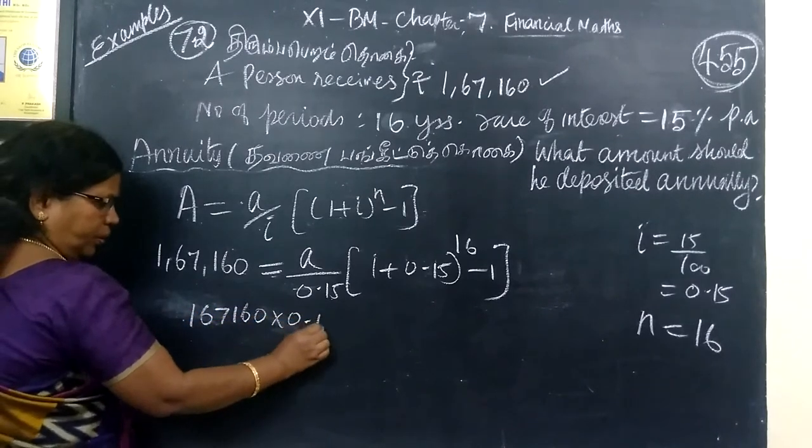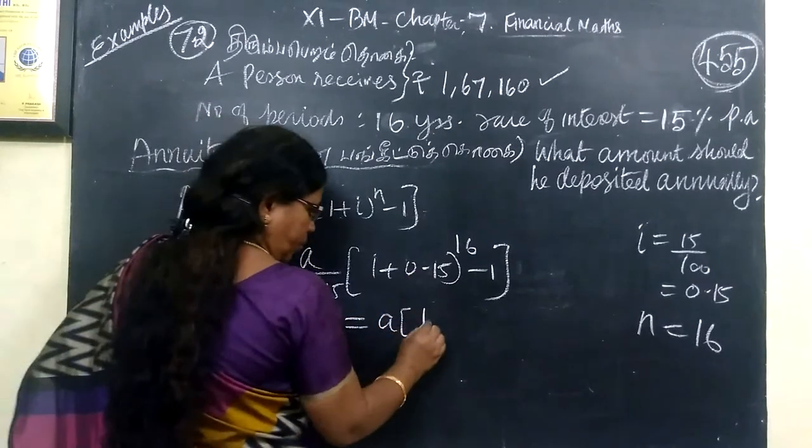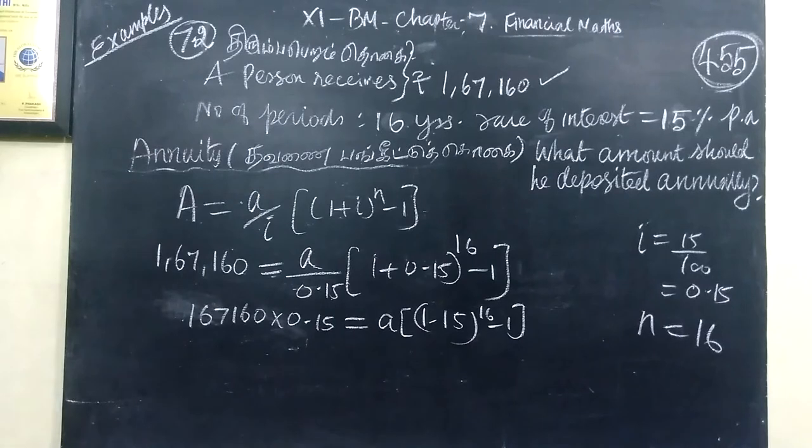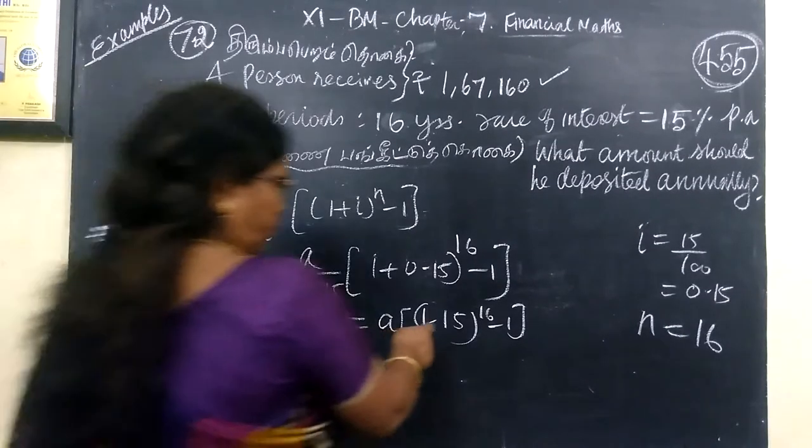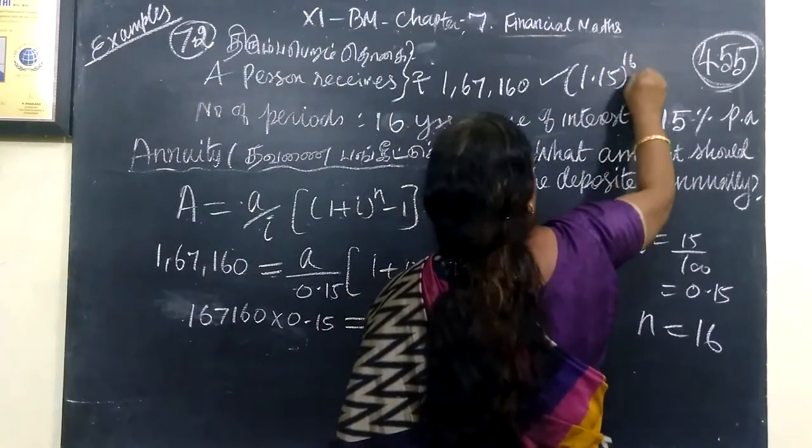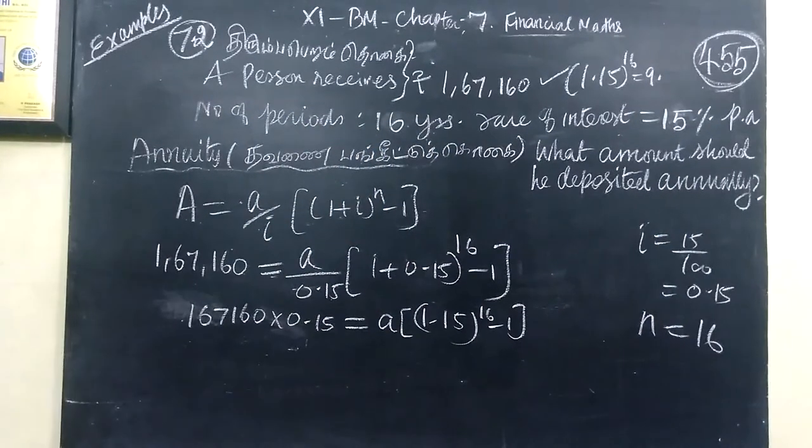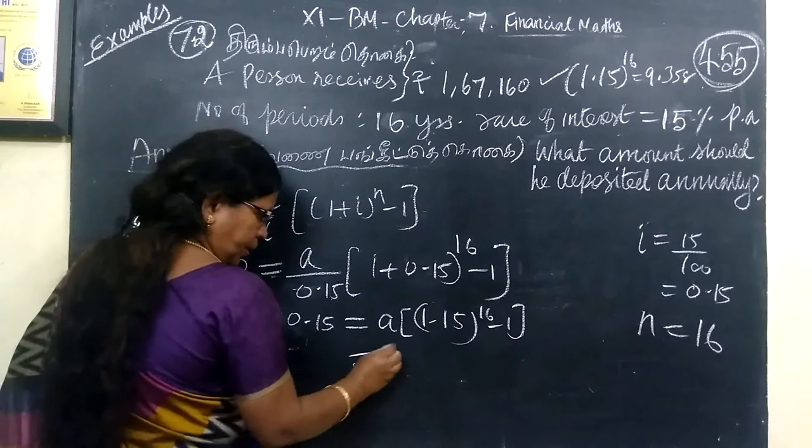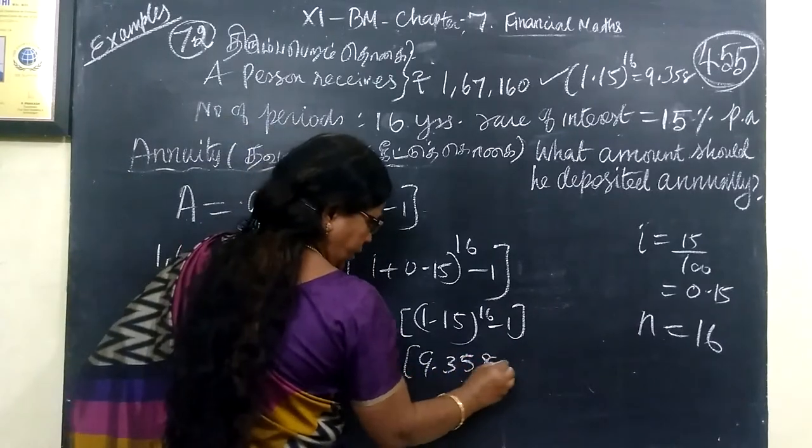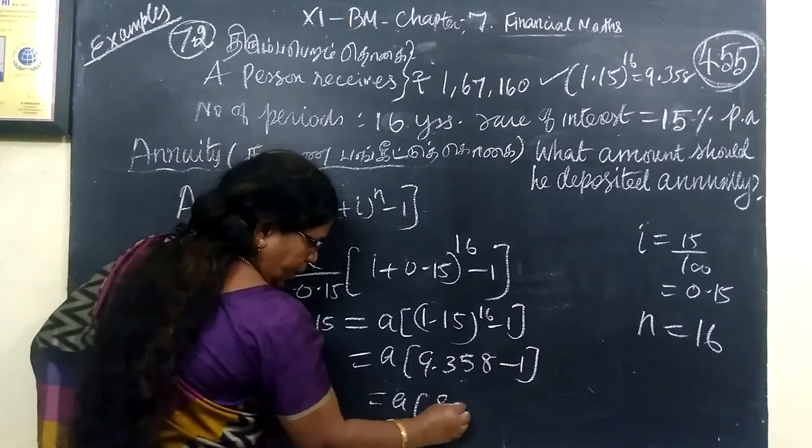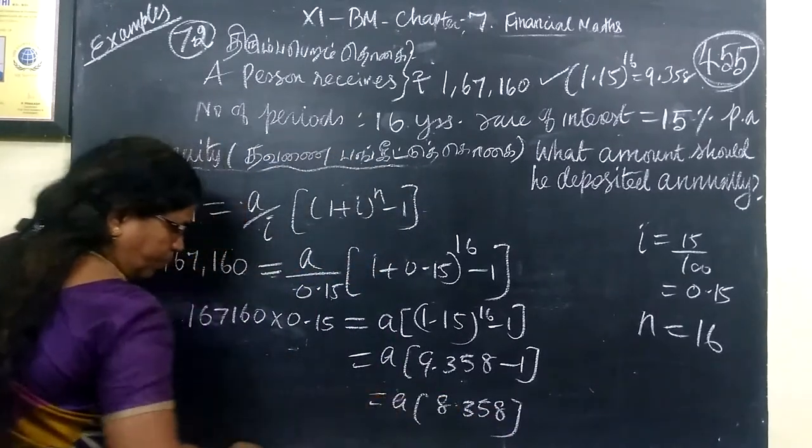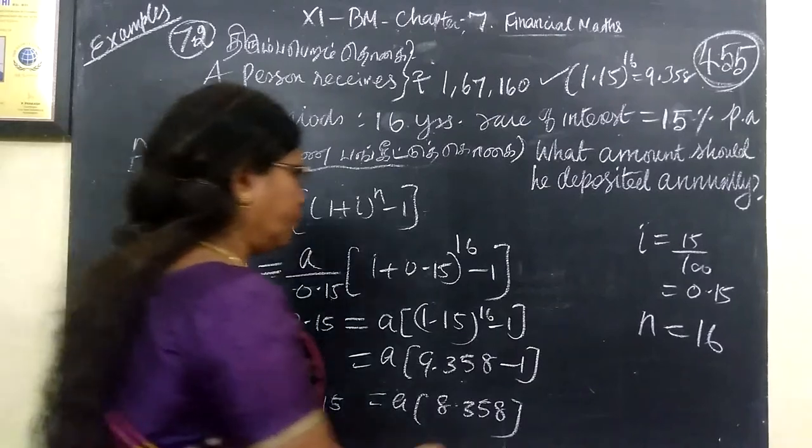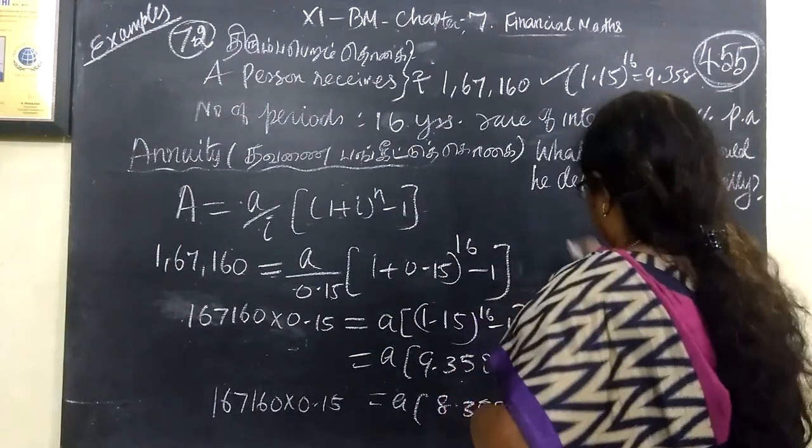167,160 into 0.15 equal to A bracket 1.15 whole power 16 minus 1. 1.15 whole power 16, here 9.358. I will substitute 9.358, then minus 1. A bracket 8.358.